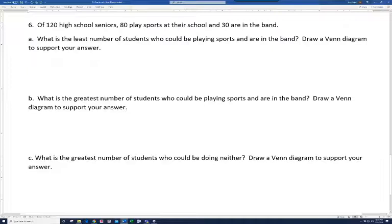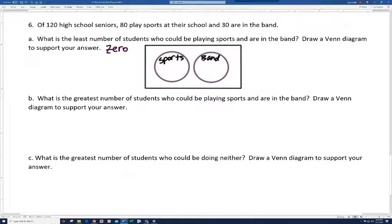Okay, so let's see. What is the least number of students who could be playing sports and are in the band? You should have said zero. So, this is the case where the two sets have nothing in common. Maybe this school has some kind of rule where you can only participate in one or the other because these are both very demanding activities. I've known people that have done both. Well, if that's the case, you've got 80 in the sports circle and 30 in the band. Since there's 120 high school seniors, we already have 110. So, if you subtract, you get 10. And so, this would be the answer to letter A. And you notice we do not have overlapping circles.